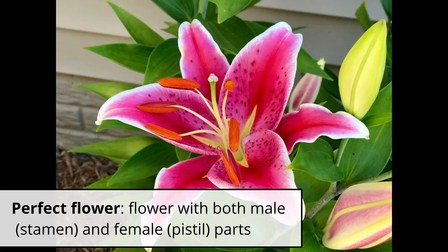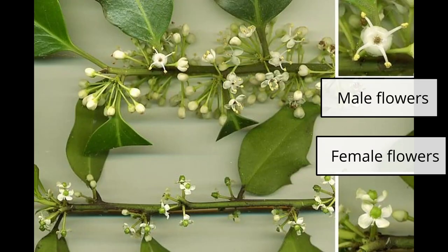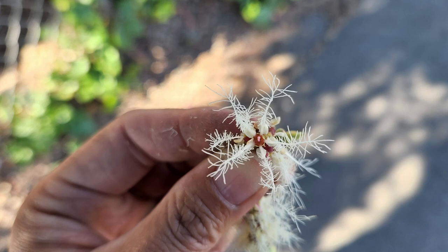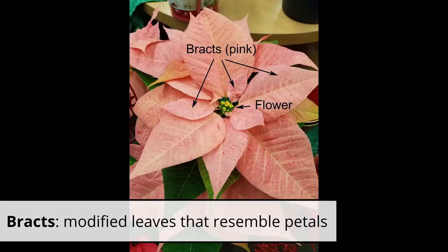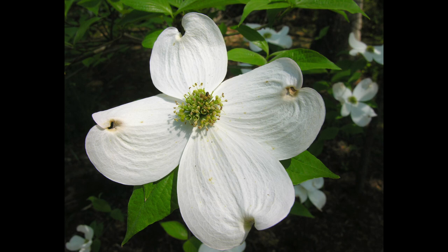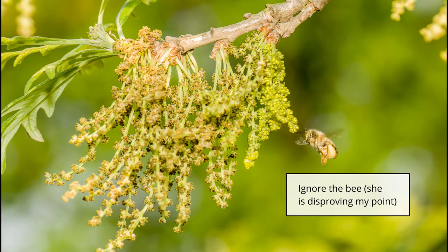This is what a botanist would consider a perfect flower. There are a lot of variations — maybe you only have the male parts, maybe only the female parts, maybe all of this has shrunk down really small. Instead of petals, you might have leaves that have become petal-like. For example, in dogwoods, what we think of as the petals are actually leaves called bracts that have changed to look like petals, but they're not actually part of the flower — the flower is just that cluster in the center. Some flowers have evolved so that they're now wind-pollinated, like oaks, which seems counterintuitive when the point of having the flower was to get specific pollinators.